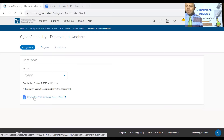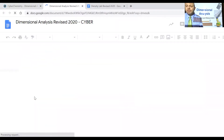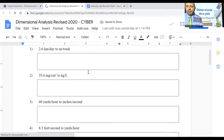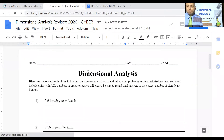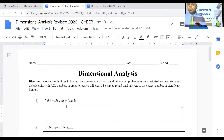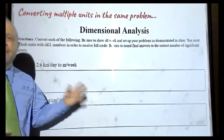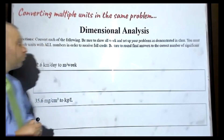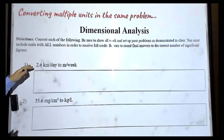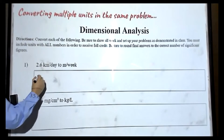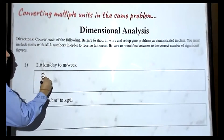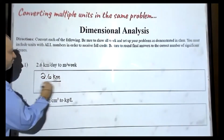If you click on this link at the bottom, you'll be able to open up the assignment. The assignment looks like this, and we're going to basically do exactly what we were doing before, which is to type into these boxes, and we're going to try and get multiple lines. So we're going to start off with the first problem: we have 2.6 kilometers per day. Notice now that we have a unit on both the top and the bottom of our fraction.